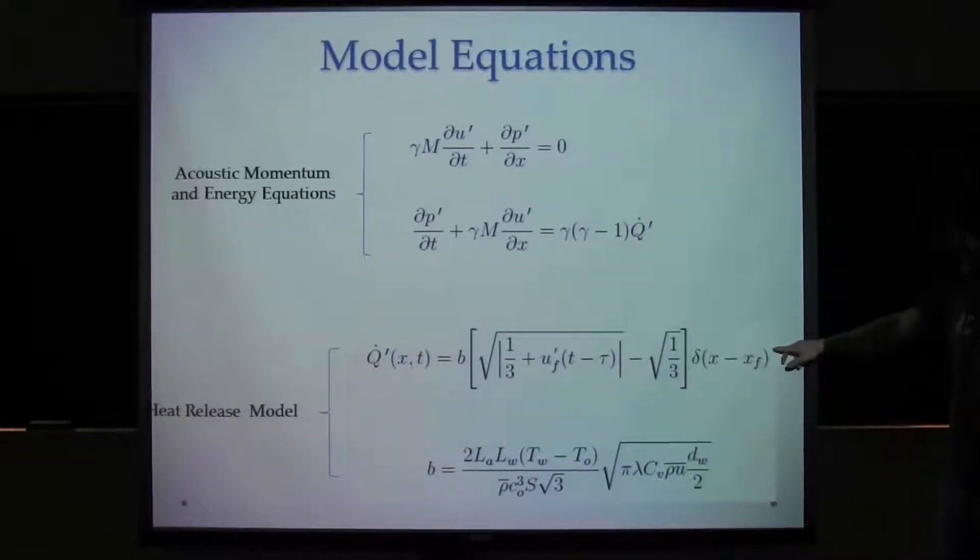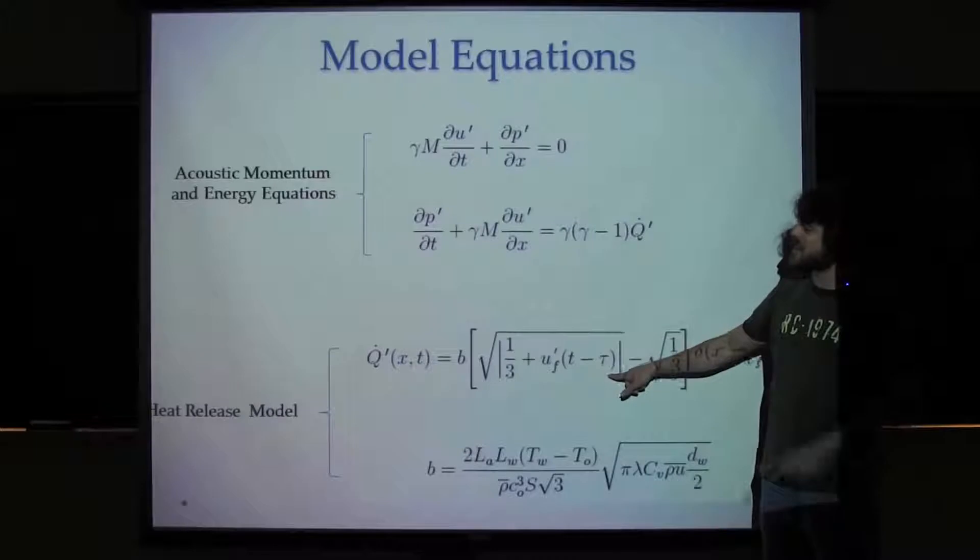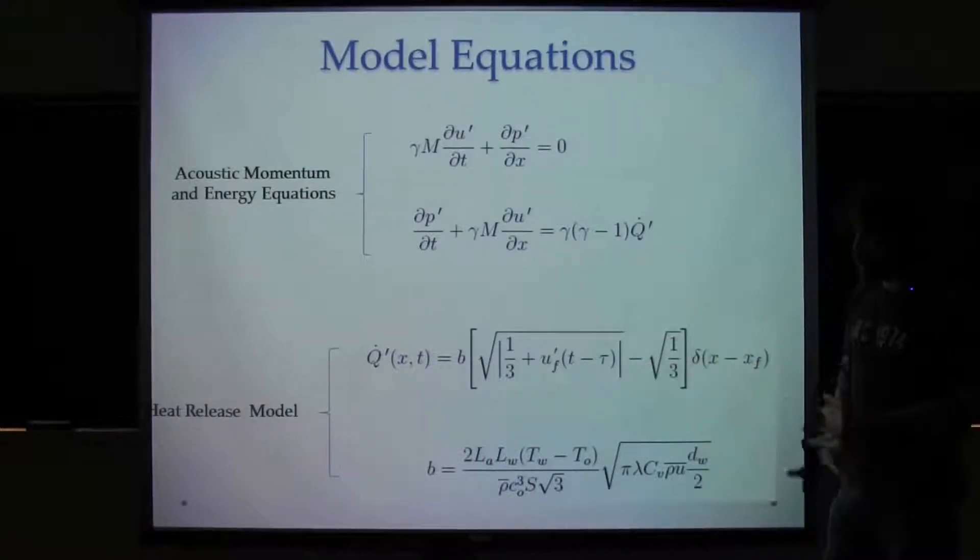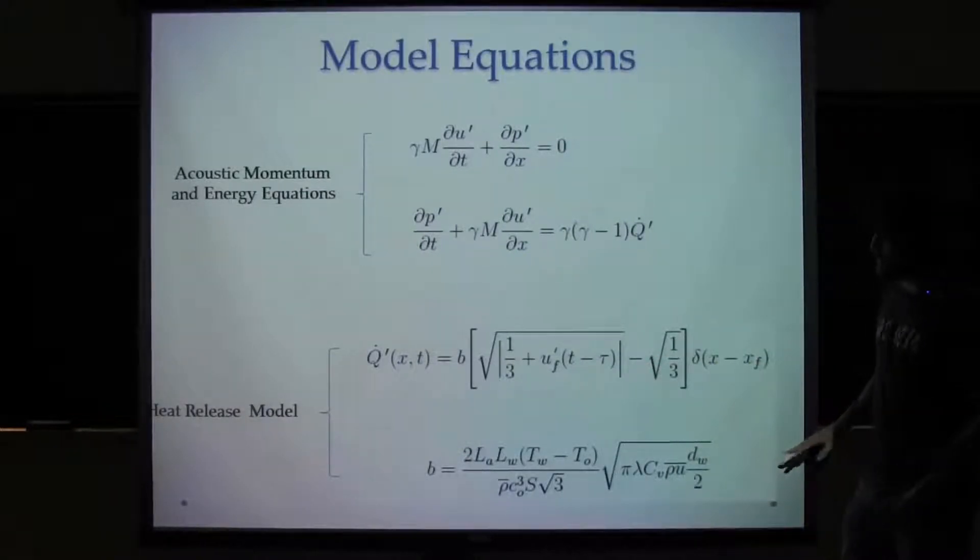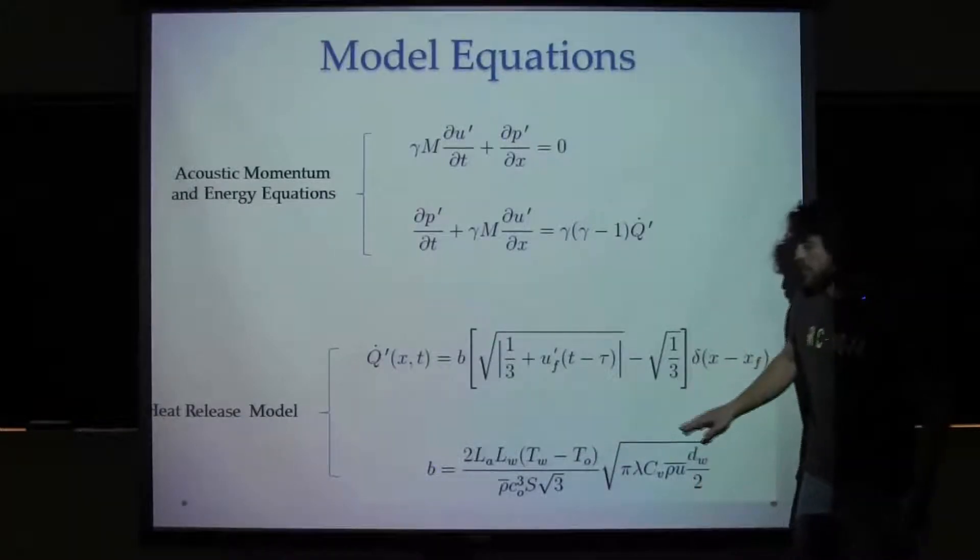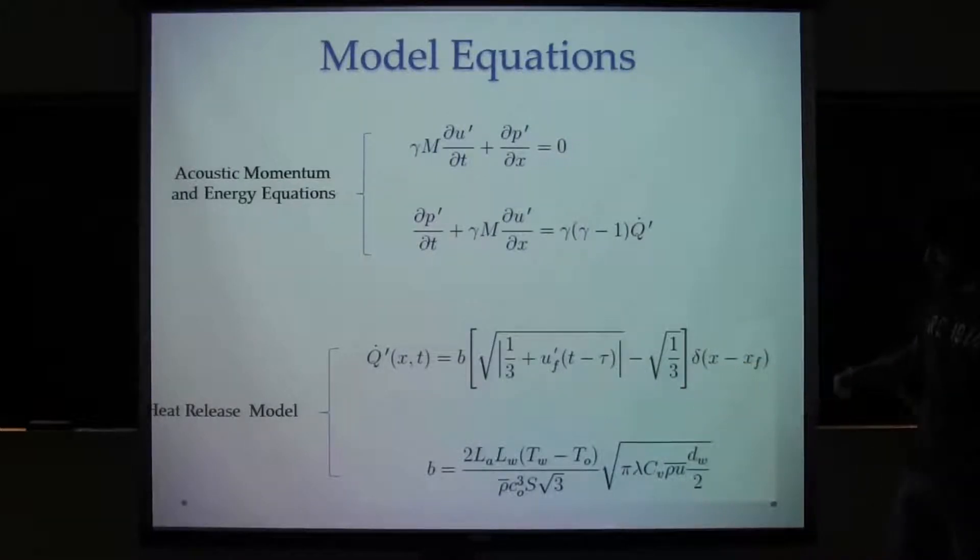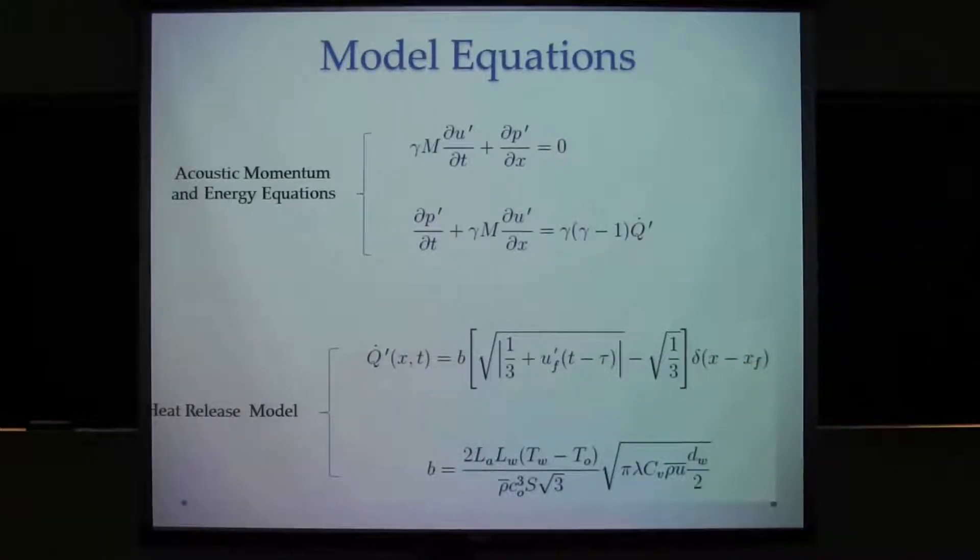This one I took from a thesis. So this is a model that only takes into account the fluctuation velocity at the heating location alone. No pressure coupling is necessary. And these are all physical parameters of our problem, like length of the tube, the temperature which we use to heat the element, area, and so on and so forth.